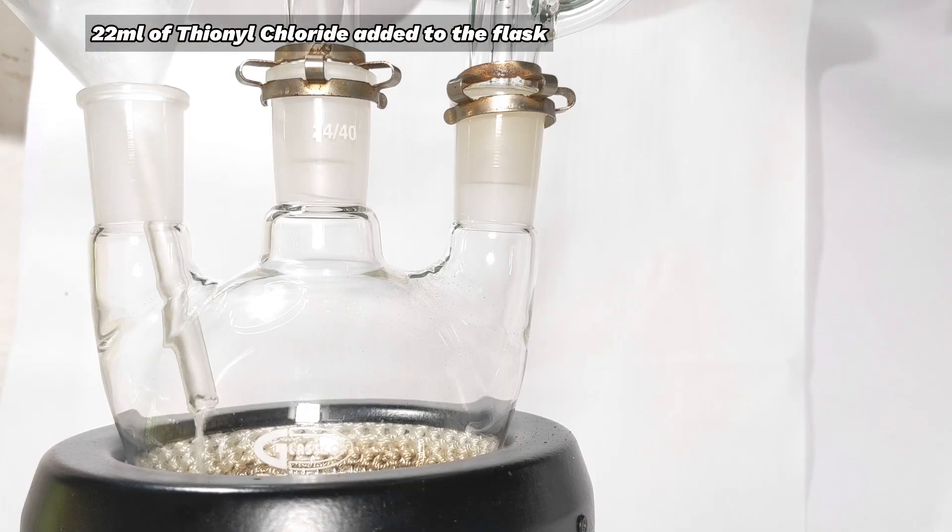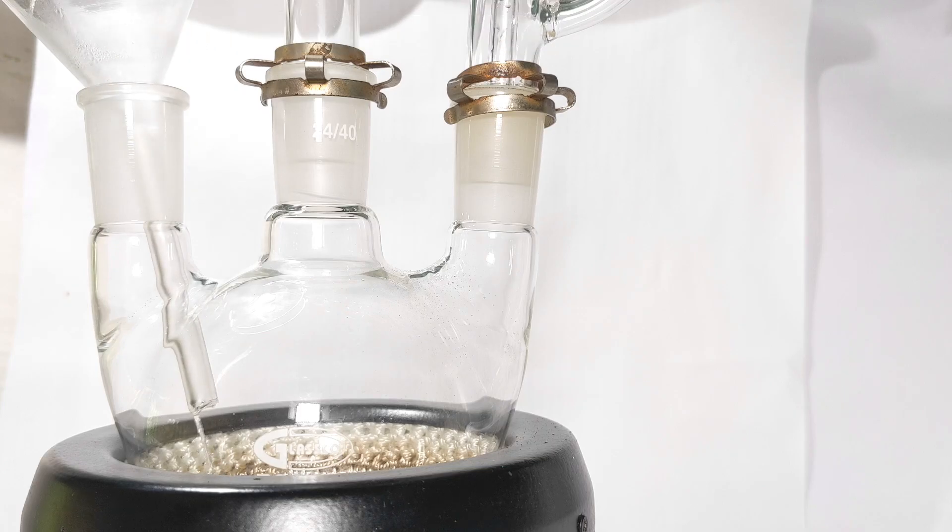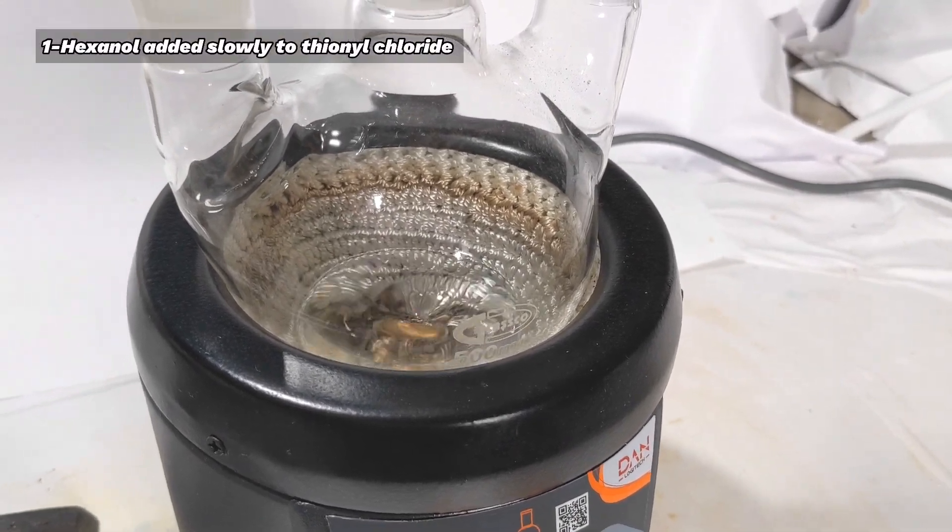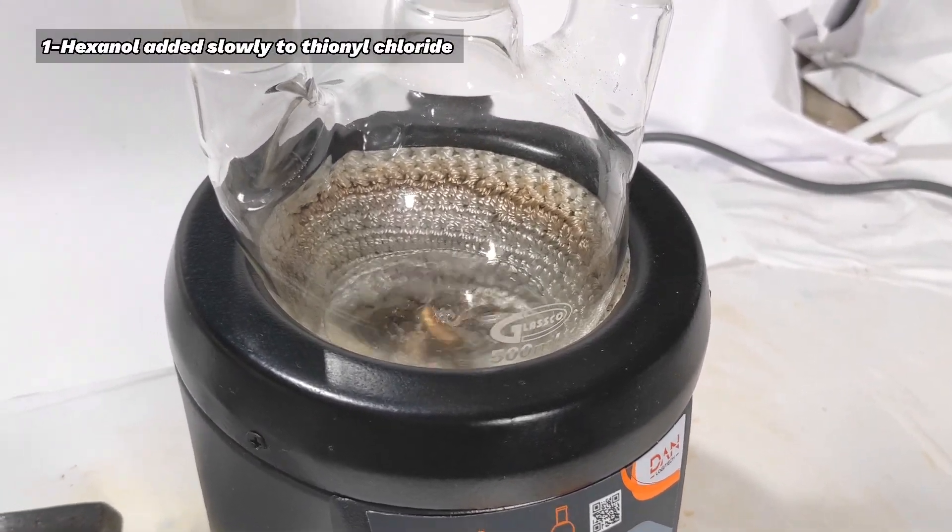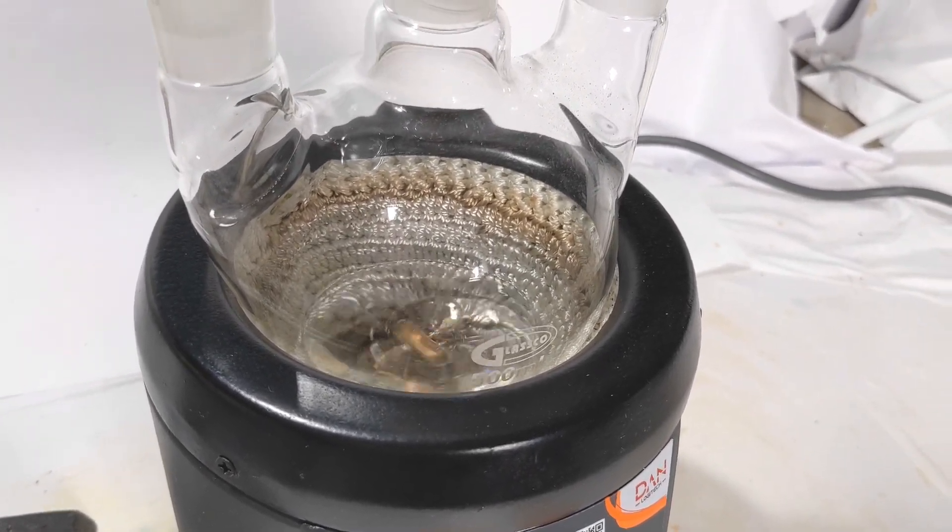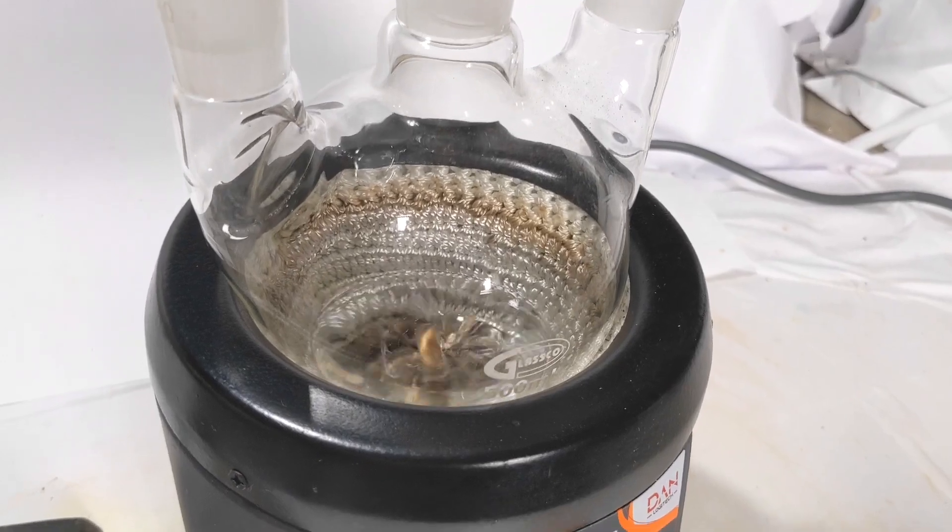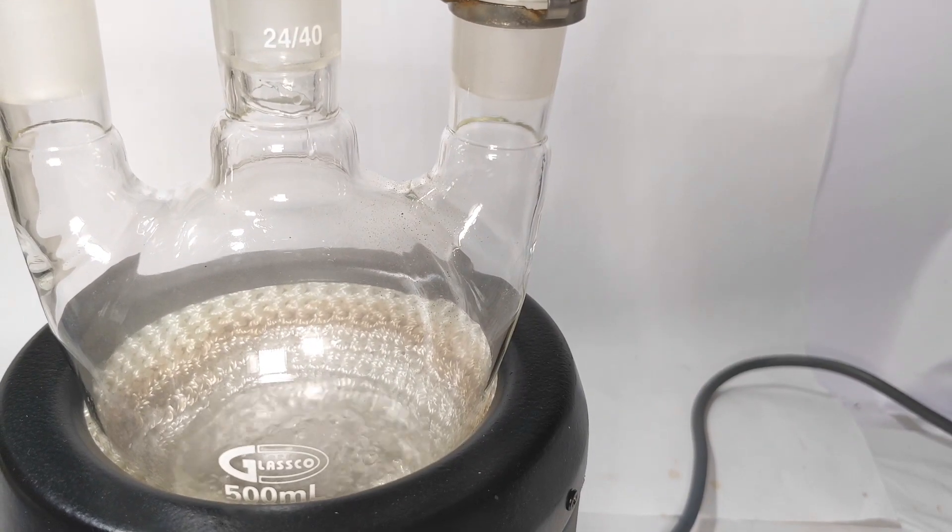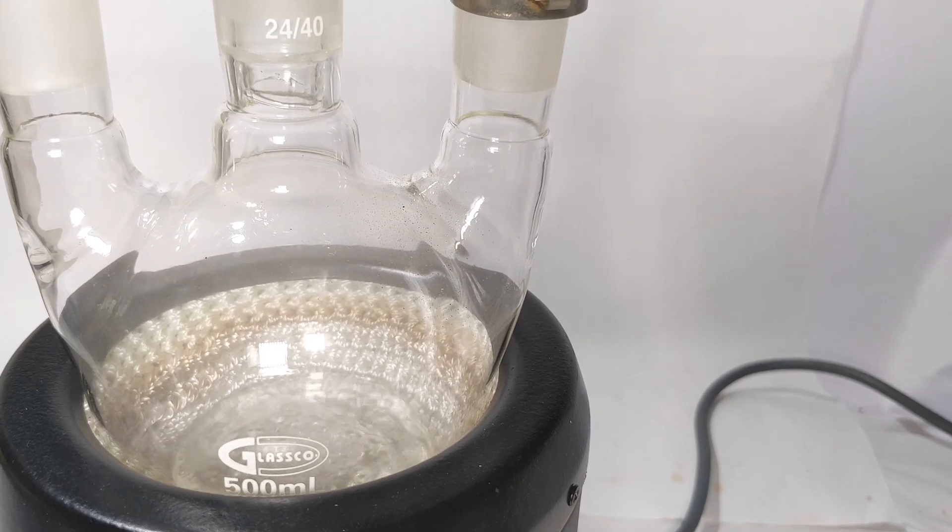22 ml of thionyl chloride was added to the round bottom flask and the side neck is stoppered. With the stirring turned on, 12.5 ml of 1-hexanol is added via the addition funnel. The addition of 1-hexanol to the thionyl chloride is exothermic, so be careful with the addition and go slowly.